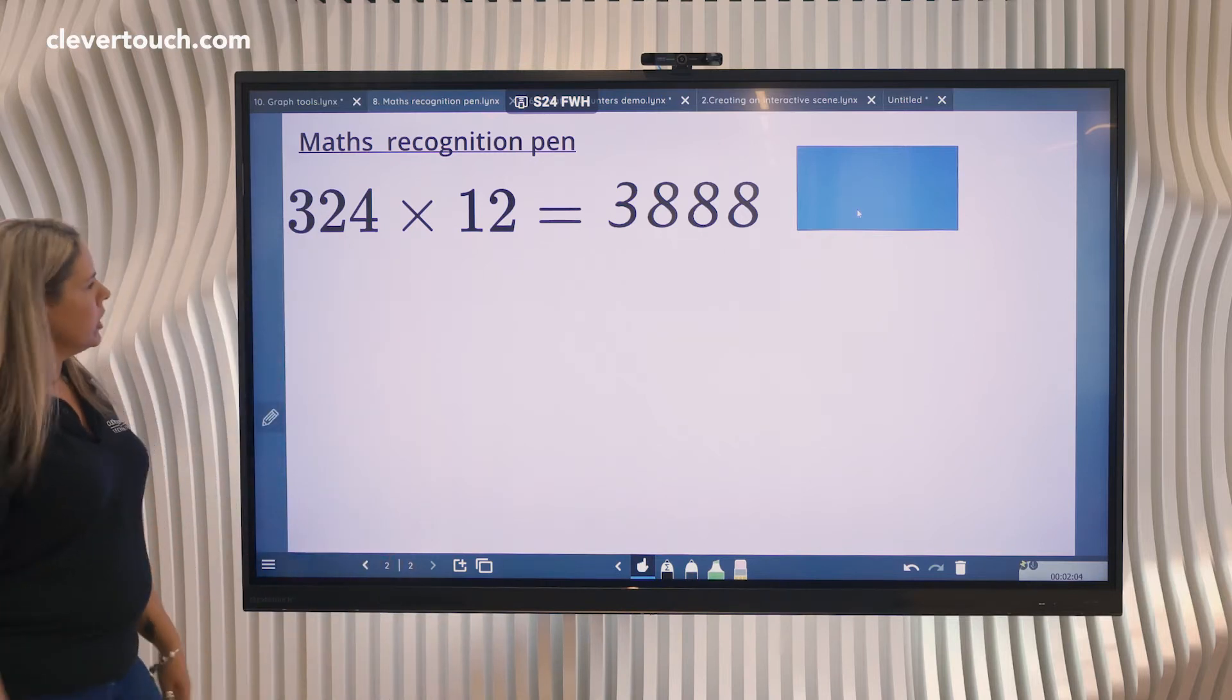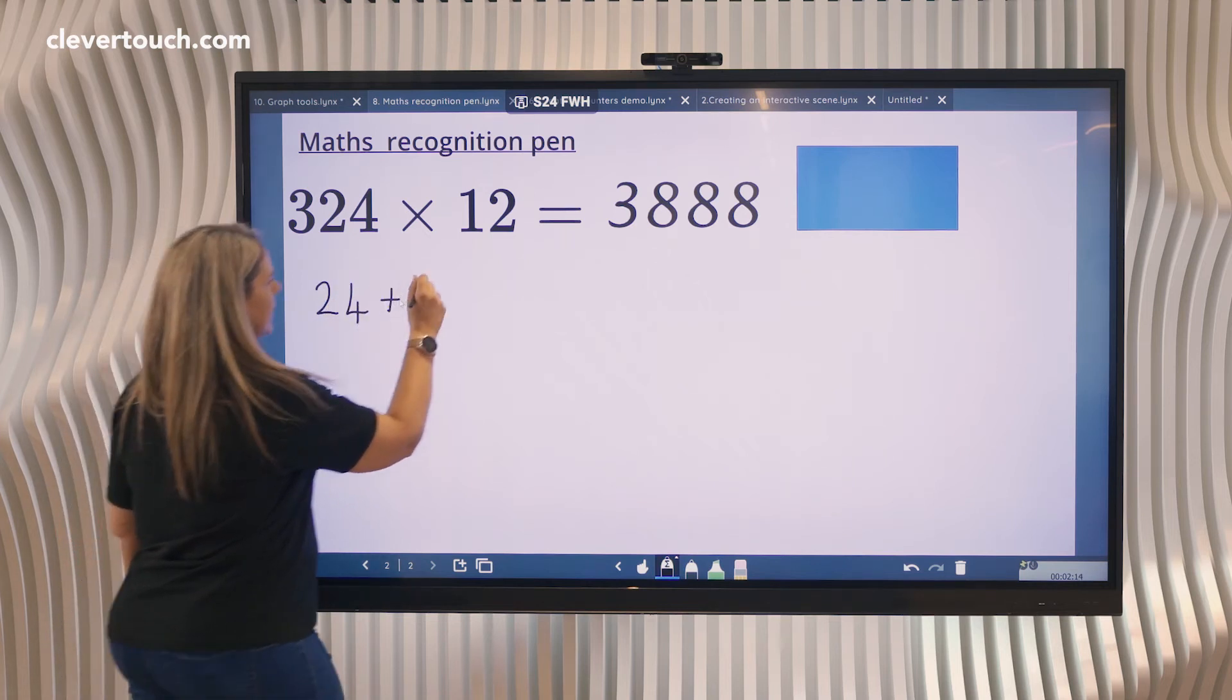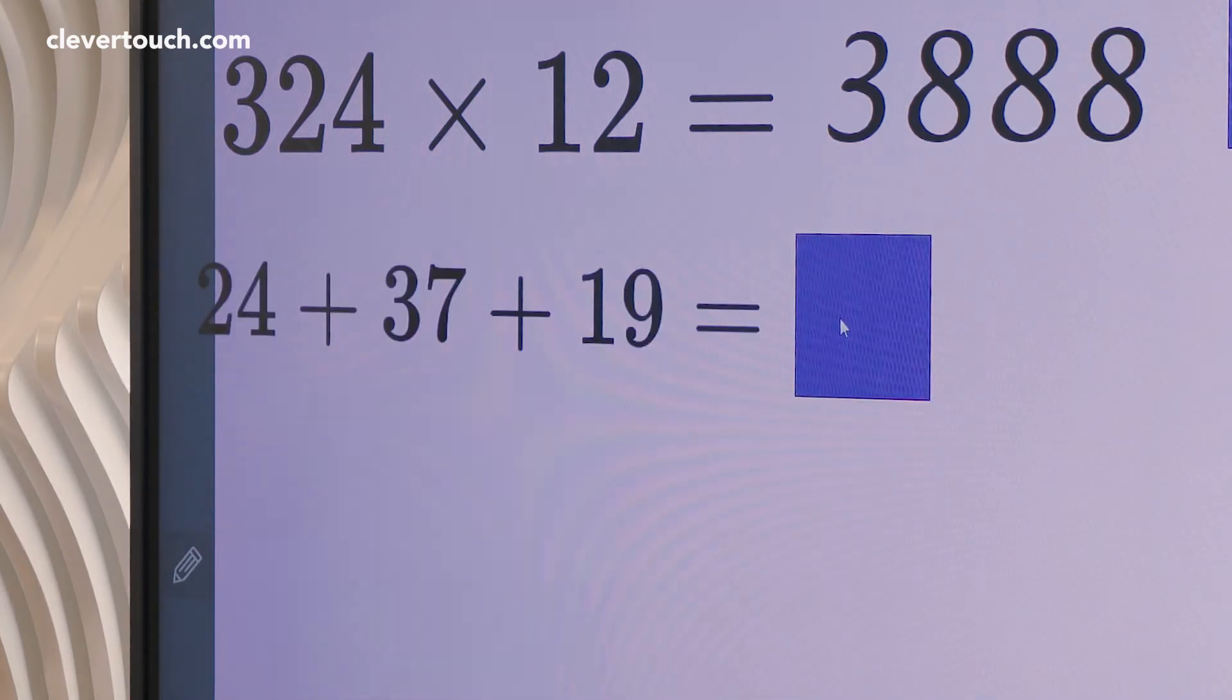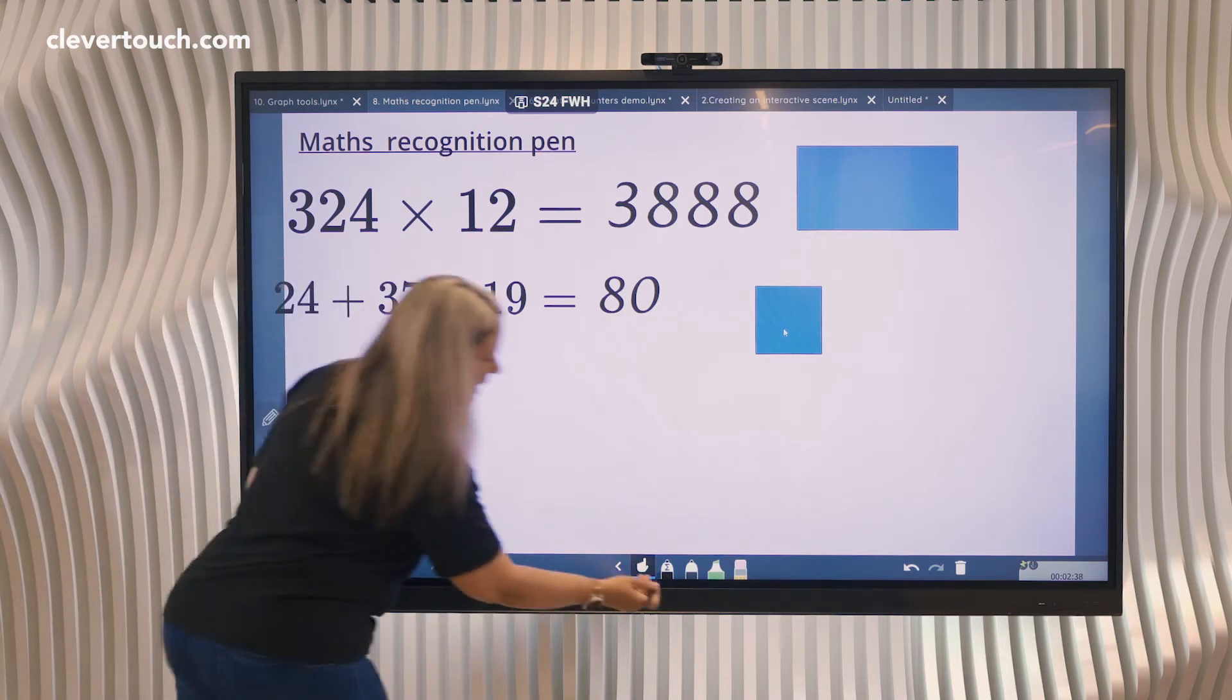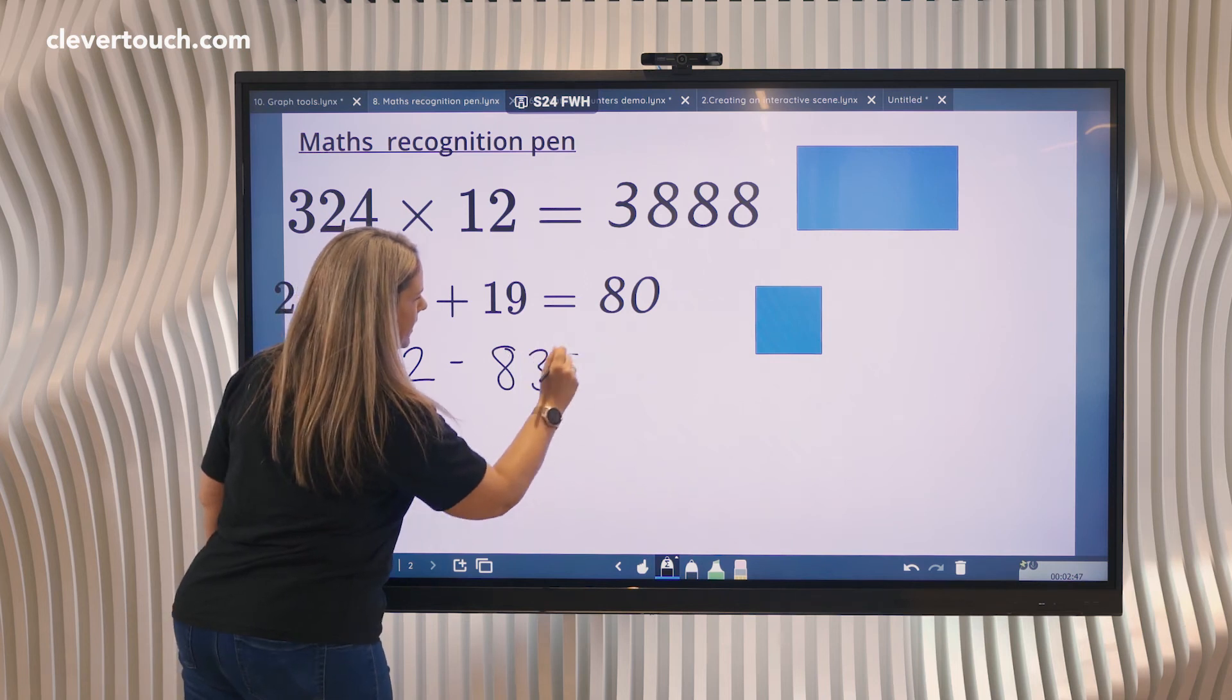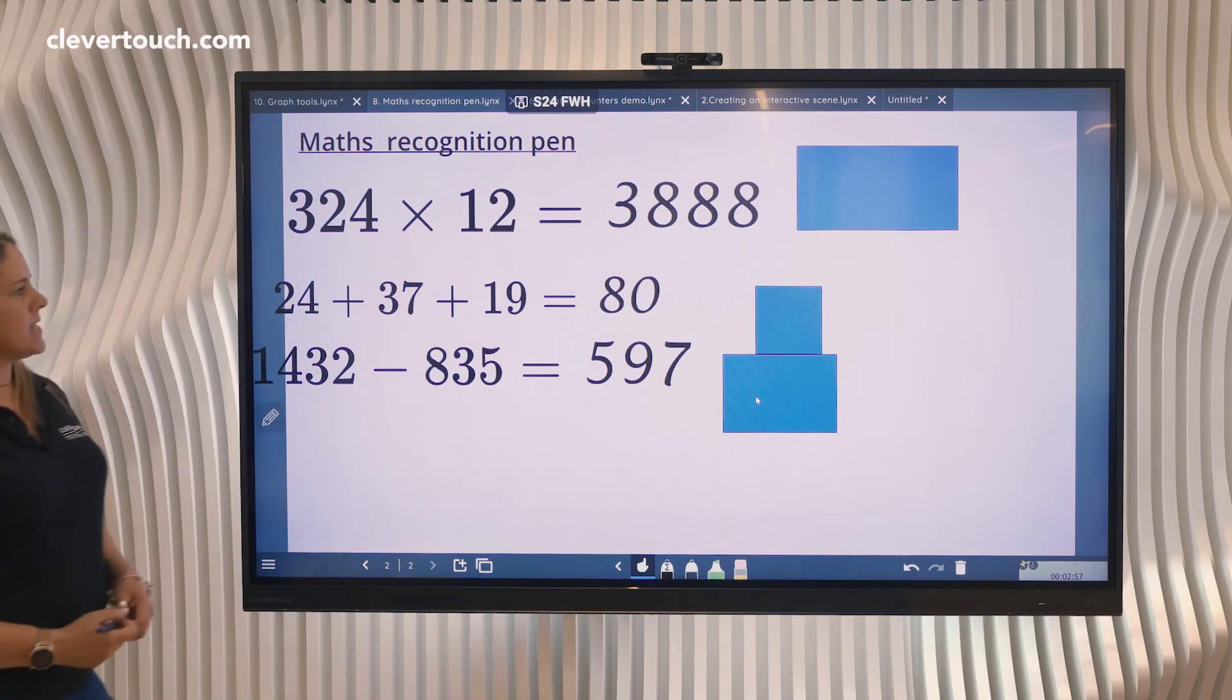Now this also works with addition and subtraction. 24 add 37 add 19 equals. Give it a moment to pick up my handwriting, and again it reveals my answer. Again, works with subtraction: 1432, this time I'm going to take away 835, and again, giving it that moment to calculate your answer, and it reveals the answer for you.